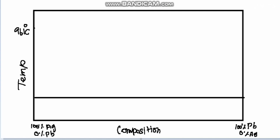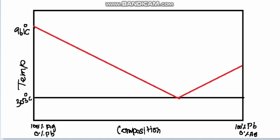In this video I will explain the phase diagram for the lead-silver system. It consists of temperature versus composition. From left to right, the percentage of silver decreases and the percentage of lead increases. The red color curve is the melting point depression curve of silver; the blue color curve is the melting point depression curve of lead. The melting point of silver is 961°C, but the melting point of lead is only 327°C, which is much lower than that of silver.